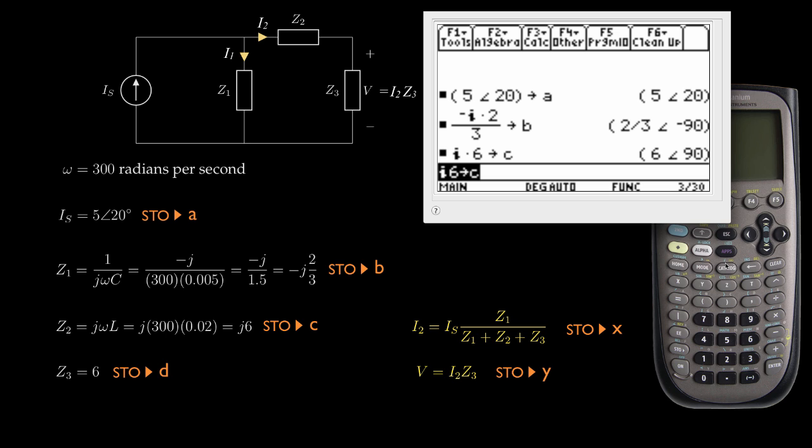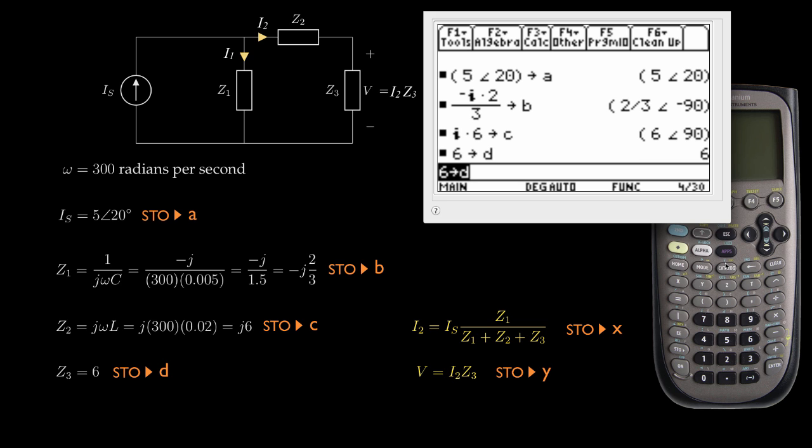I have that stored. The final impedance I'll store is simply the number 6 for the resistor, and I'll store that one in D. So now I have the source current and the three impedances stored in the variables A, B, C, and D.